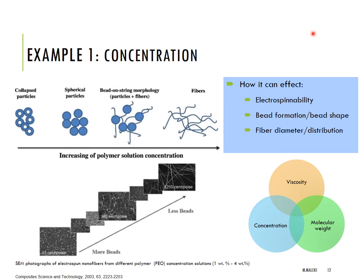One of the important parameters is solution concentration, which can affect electrospinnability, bead formation, and fiber diameter. By increasing the solution concentration, chain entanglement increases, which is important for fiber fabrication. This is an example showing the change in morphology from beaded fibers to smooth fibers by increasing the concentration. It is important to note that viscosity, polymer concentration, and polymer molecular weight are all connected to each other and must be considered together.